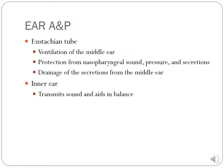The eustachian tube ventilates the middle ear, offers protection from nasopharyngeal sound pressure and secretions, and helps equalize pressure — that popping sensation when yawning at altitude. It also handles drainage of secretions from the middle ear. The inner ear transmits sound and aids in balance.